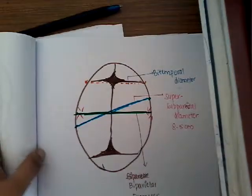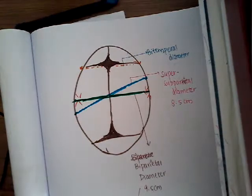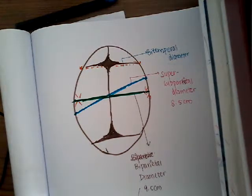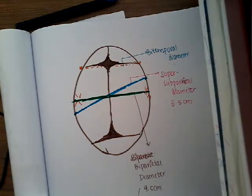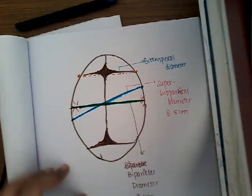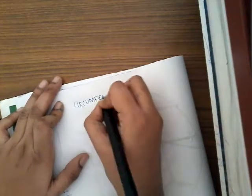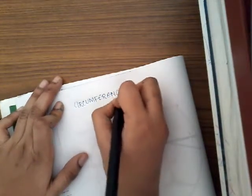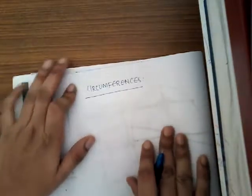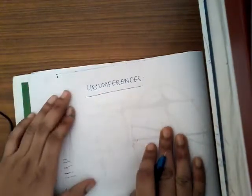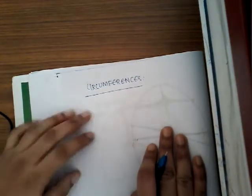These are the transverse diameters of the fetal skull. Now let us also discuss the circumferences of the fetal skull in different positions — what the circumferences are and what the plane of engagement is.